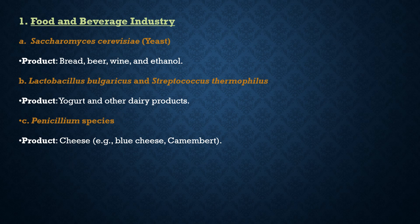Third in the food and beverage category is Penicillium species, used for cheese making — for example, blue cheese or Camembert. The advantage is it creates distinct flavor and texture by breaking down fats and proteins. The disadvantage is that not all Penicillium species are beneficial; some are pathogenic and produce mycotoxins, making them harmful and unusable.